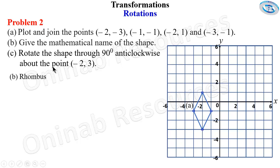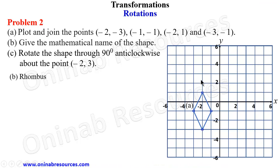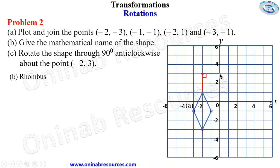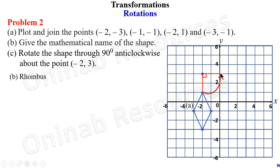Part c: rotate the shape through 90 degrees anti-clockwise about the point (-2, 3). We mark that point out. Since it is going anti-clockwise, we go like this. We draw a line from the point of rotation to the object, then get our angle — since it is 90 degrees, we have it there. The image to be formed will have its tip transferred to this place.